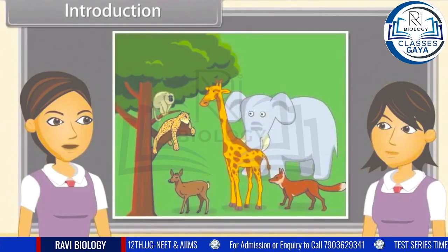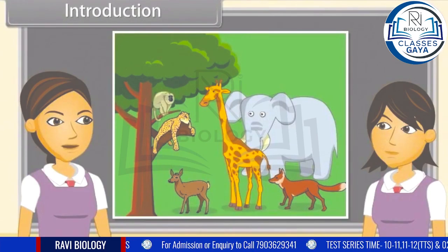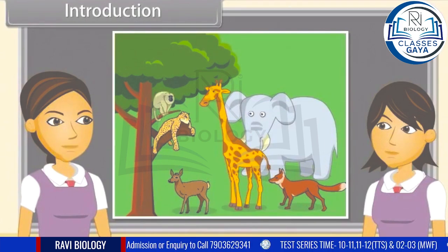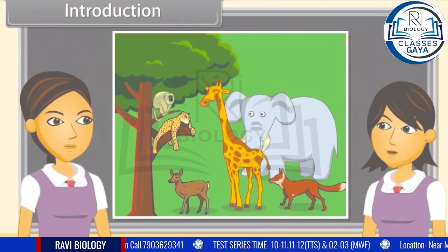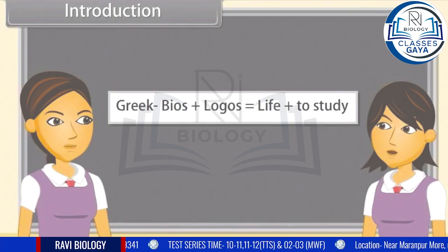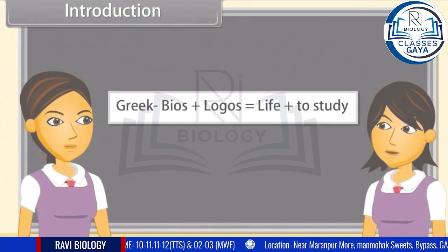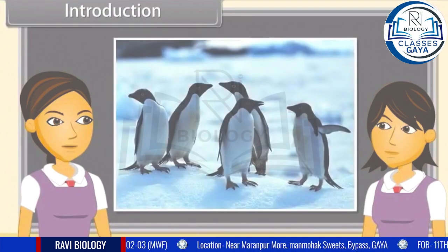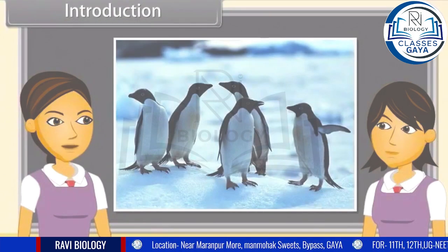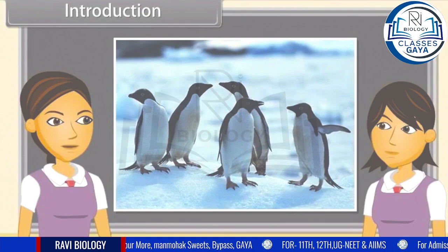We know that the branch of science which deals with the study of living organisms is called biology, or the study of life. The word biology has been taken from Greek words: bios meaning life, plus logos meaning study. Things which depict growth, reproduction, and ability to sense environment and mount a suitable response are called living things.